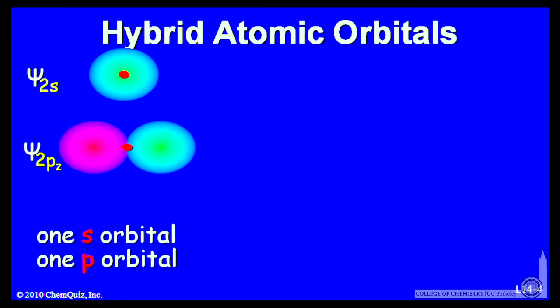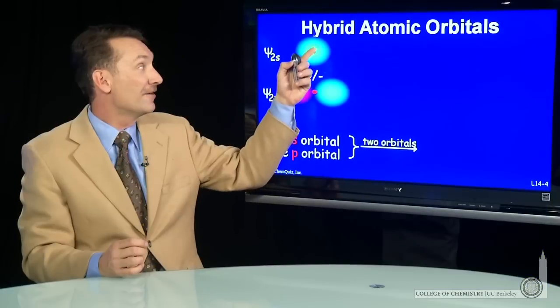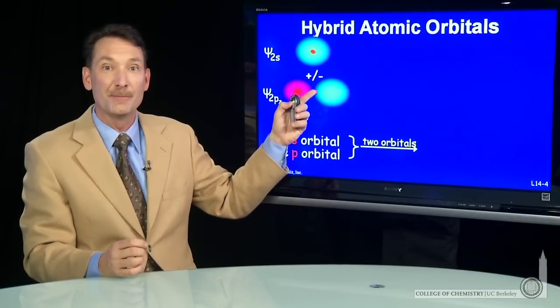an S and a P, I need to form two new atomic orbitals. So the two new atomic orbitals will be a linear combination. If I add the S and the P together,